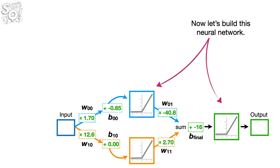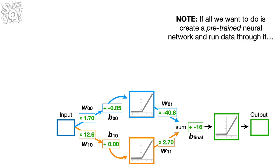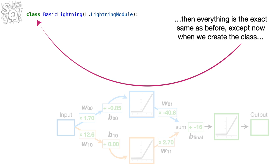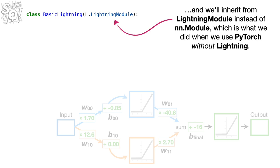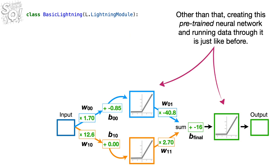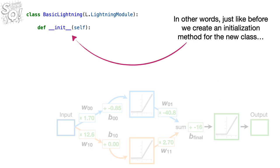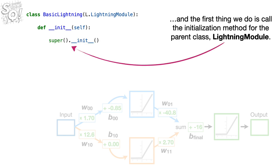Now let's build this neural network. Note: if all we want to do is create a pre-trained neural network and run data through it, then everything is the exact same as before, except now when we create the class, we'll name it BasicLightning, and we'll inherit from LightningModule instead of NN.Module, which is what we did when we used PyTorch without Lightning. Other than that, creating this pre-trained neural network and running data through it is just like before. We create an initialization method for the new class, and the first thing we do is call the initialization method for the parent class, LightningModule.